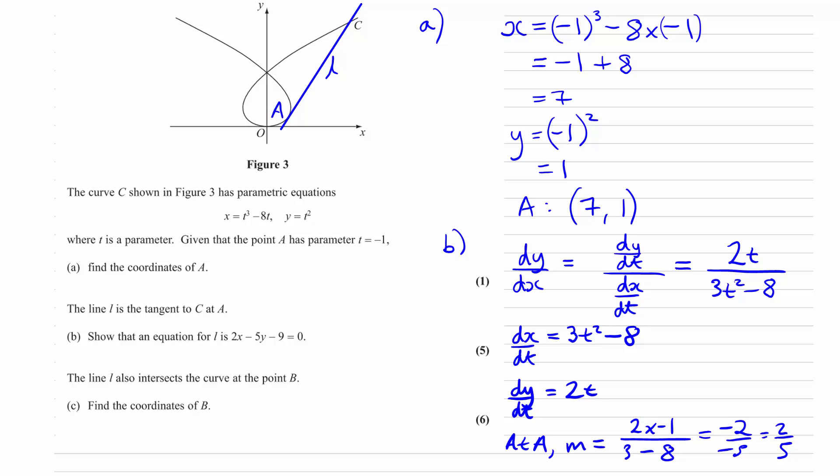We know the gradient and we know a point from the coordinates of A, so we need the formula for a straight line: y minus y1 equals m times x minus x1. We've found m and have x1, y1, so we substitute into that and write down the equation of the line.